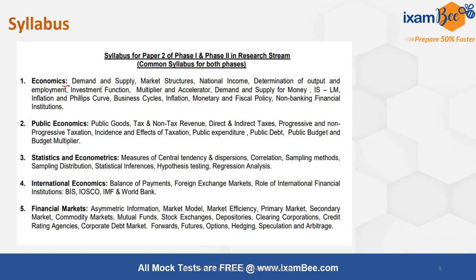The syllabus for Economics covers Microeconomics topics like demand, supply, and market structures. Macroeconomics includes national income, determination of output and employment in Keynesian and Classical frameworks, investment functions, multiplier-accelerator, money demand and supply, IS-LM, inflation, Phillips curve, business cycles, monetary and fiscal policy, and non-banking financial institutions. Public Economics covers public goods, direct and indirect taxes, progressive and non-progressive taxation, incidence of tax, public expenditure, public debt, and the budget multiplier.